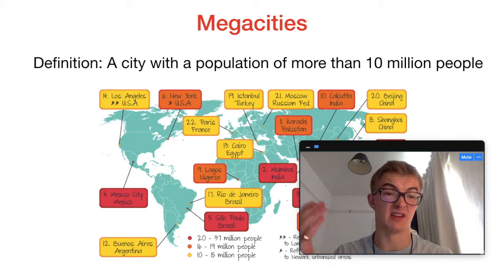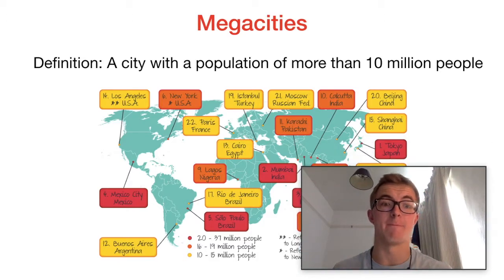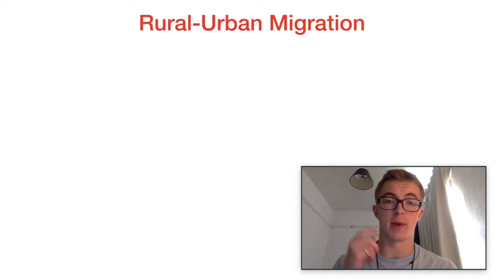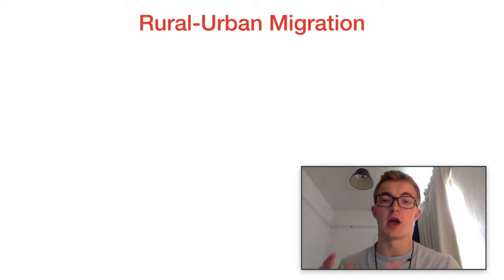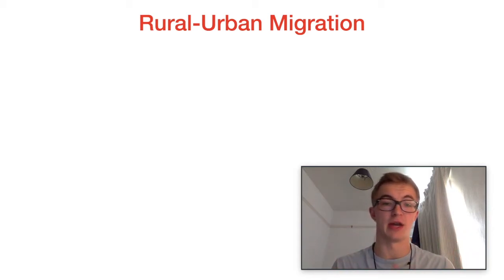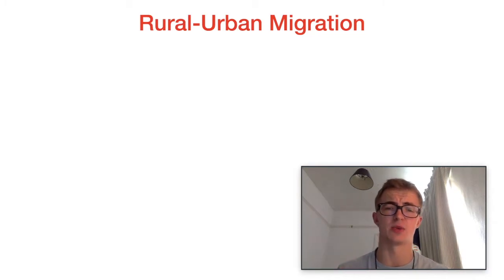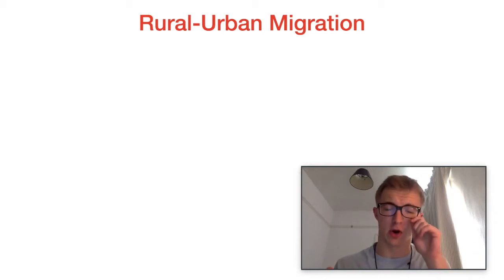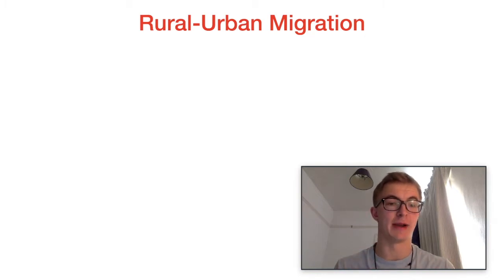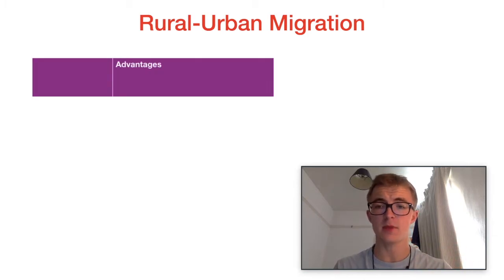The reason a megacity forms is primarily due to rural-to-urban migration — rural dwellers who move to a city for a particular reason, because they've been pushed or pulled. You may have looked at Lee's theory, the push-pull theory: what's making people leave and what's attracting them to city life. Let's look at some consequences you can use when answering an essay question on this topic.